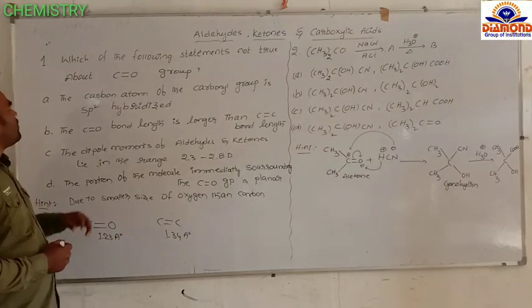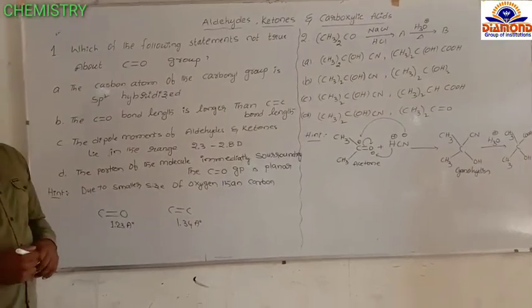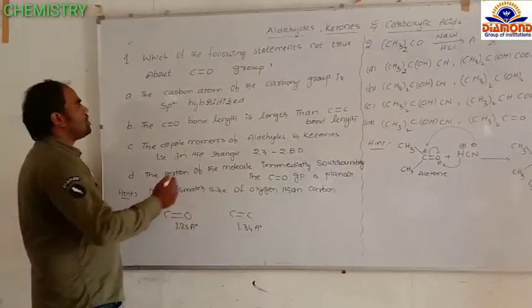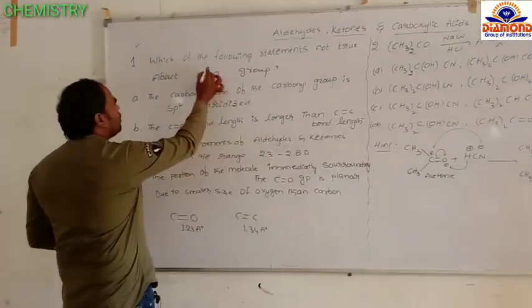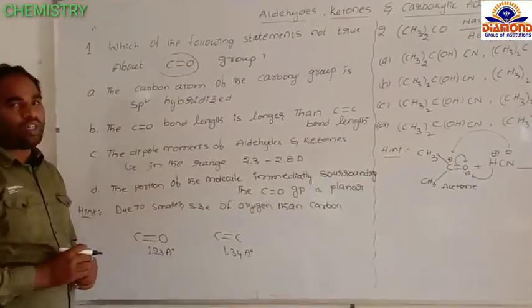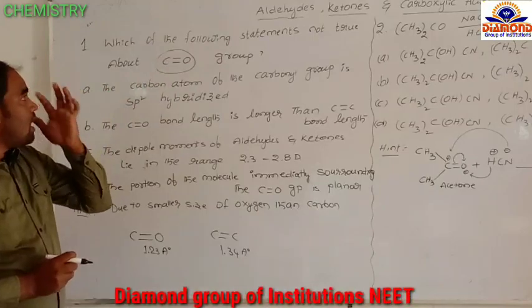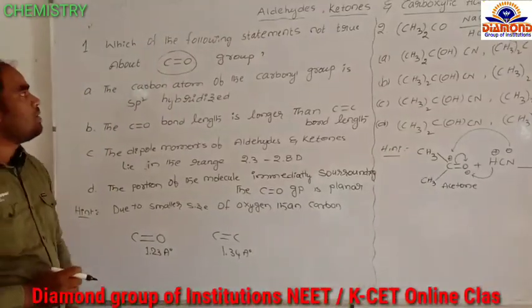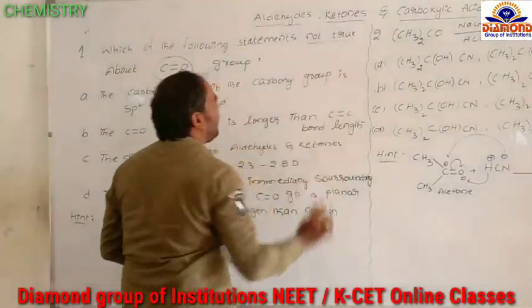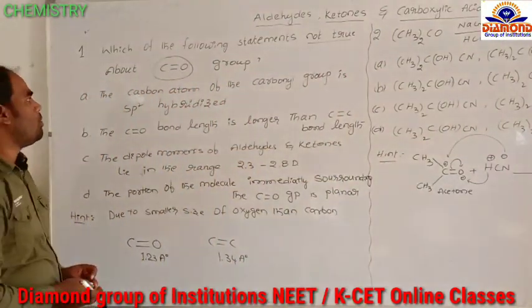So here, first question: which of the following statements is NOT true about the C double bond O group? First, try to understand the question — which of the following statements is not true about a carbonyl group, the C=O group.